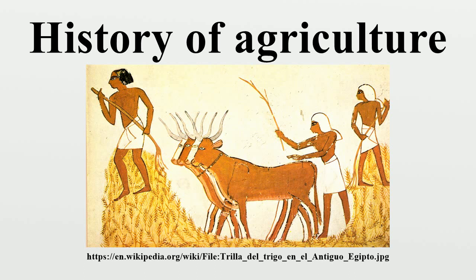The recent history of agriculture has been closely tied with a range of political issues including water pollution, biofuels, genetically modified organisms, tariffs, and farm subsidies.